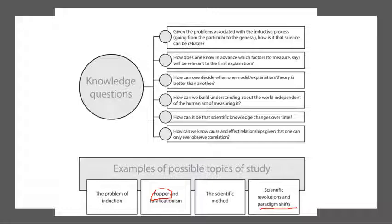Hopefully that gives you some background on the knowledge framework and how to use it. Going back to our objectives: can you describe the scope, application, language, and methodology of natural sciences from your own experience? And can you compare and contrast it with human sciences? You might find they're actually quite a bit more similar than you originally thought. Have a good day and let me know if you need anything, especially for essay task number two.